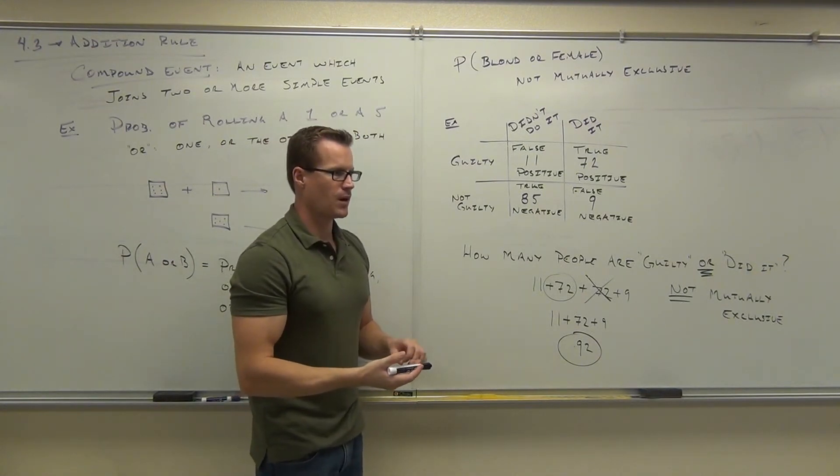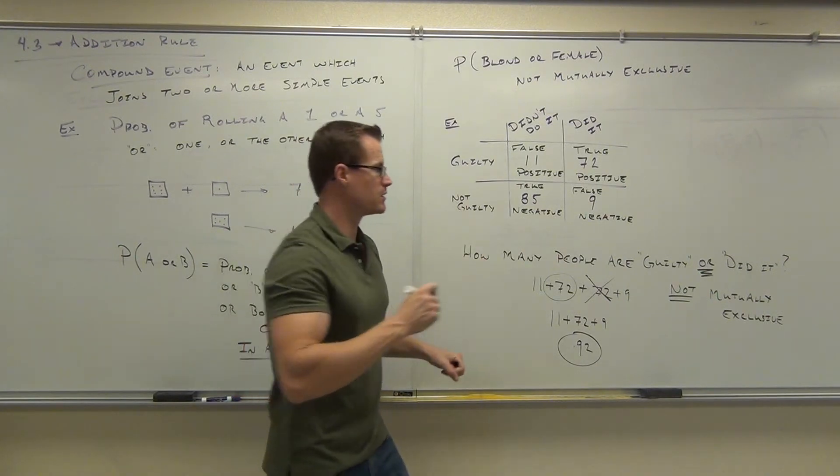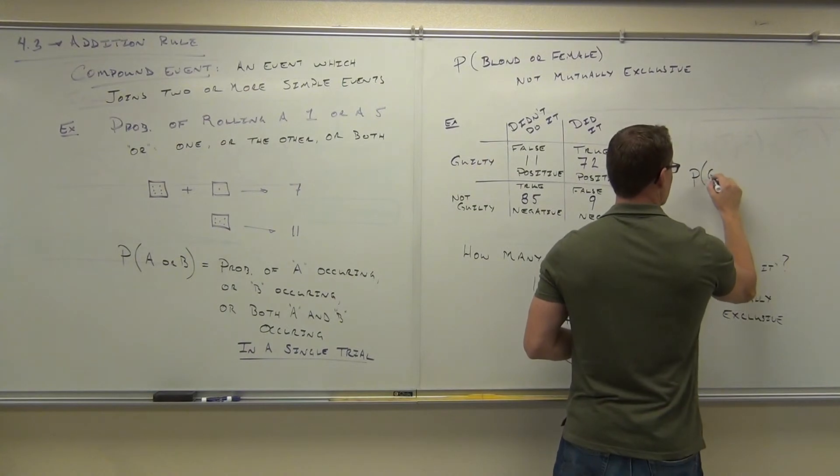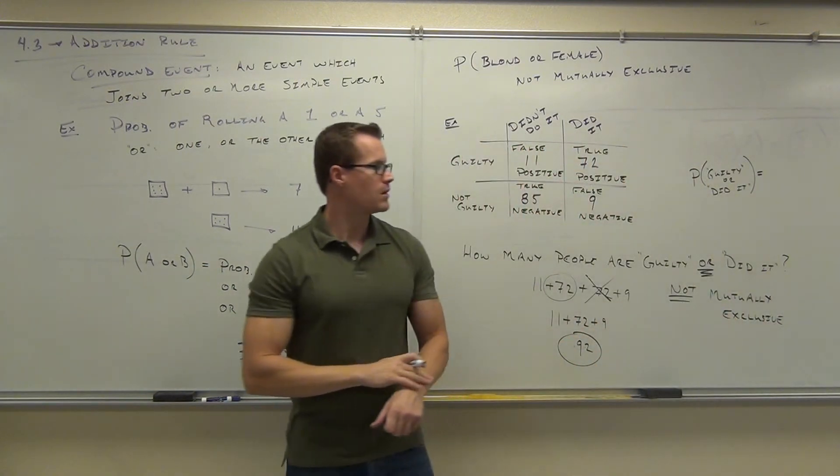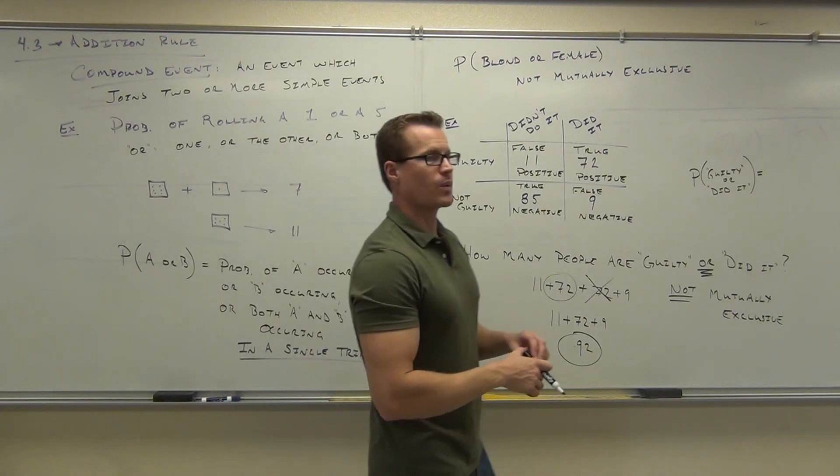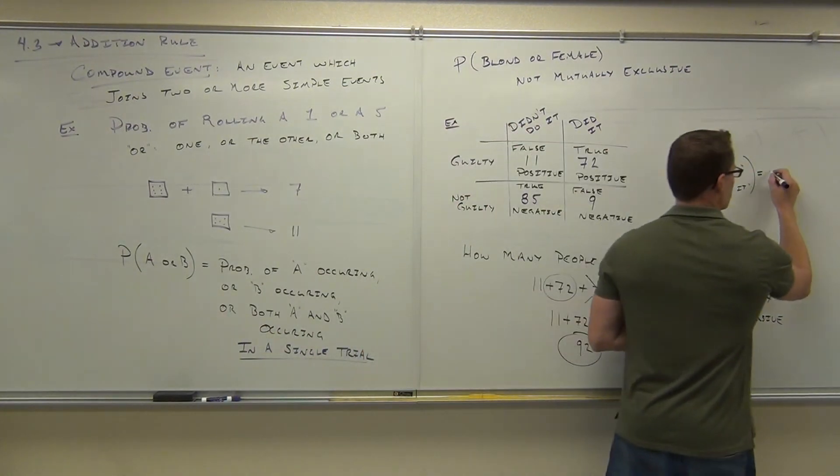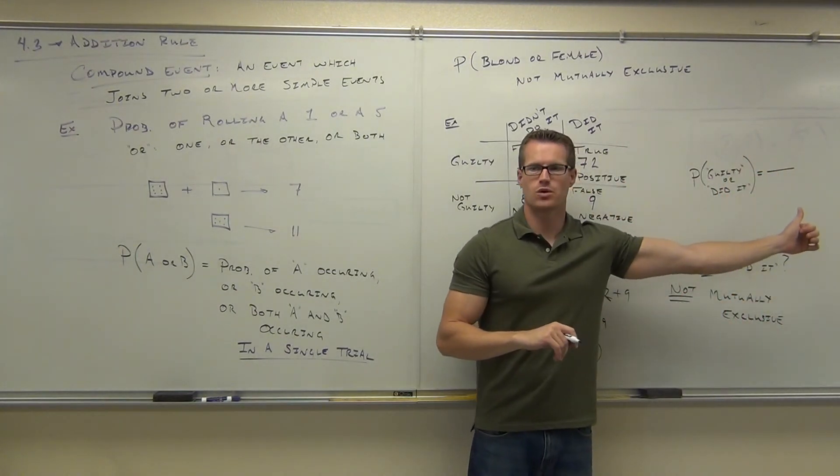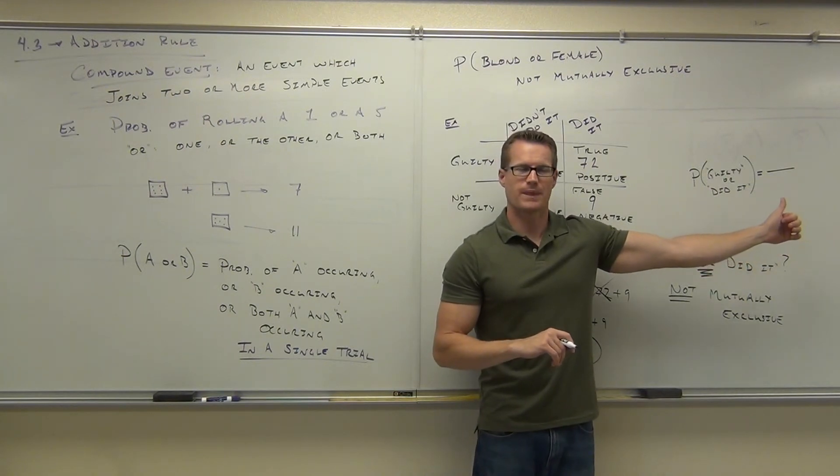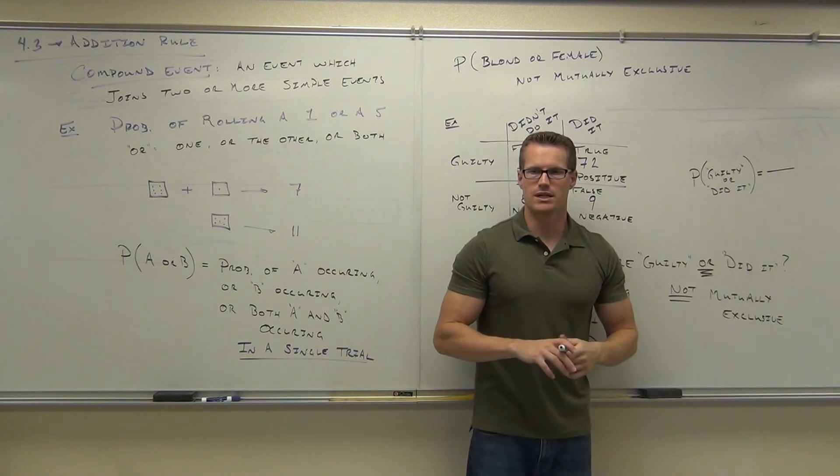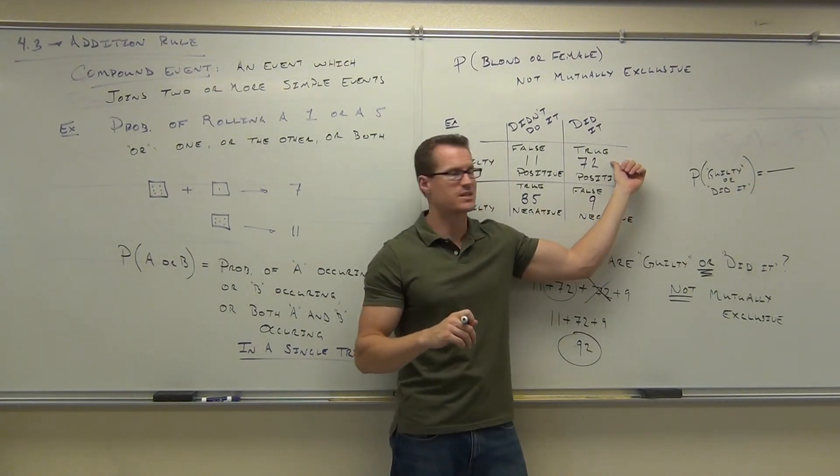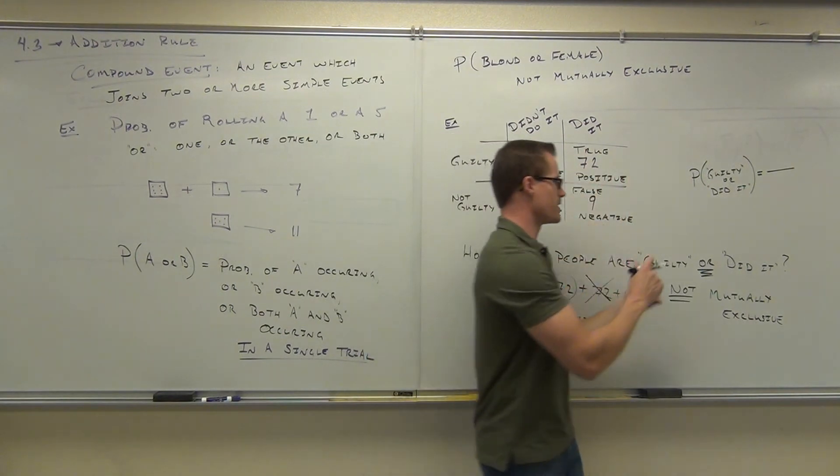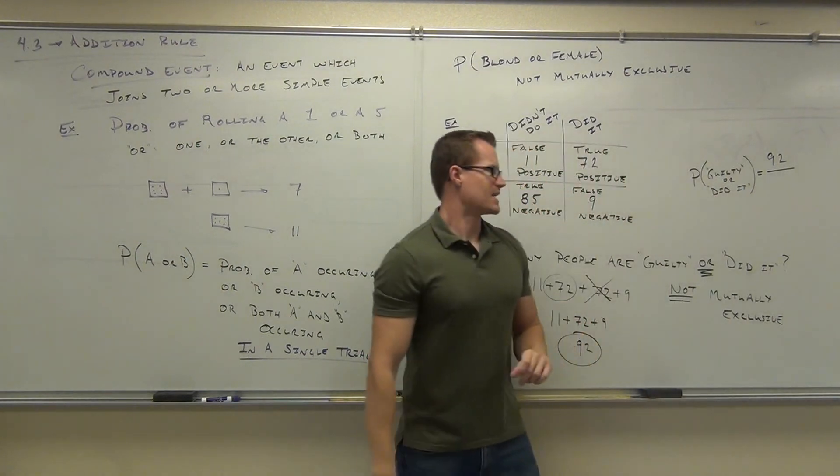Now the next question is, can you find the probability of randomly selecting a person who is guilty or did it? What we have to do is just like any other probability problem you've ever seen, how many ways could you be guilty or did it over how many total people we just surveyed or observed? So can you tell me how many people were guilty or did it that we just talked about? Remember, we're not just here. This is guilty and did it. We don't care for both. It's either or both.